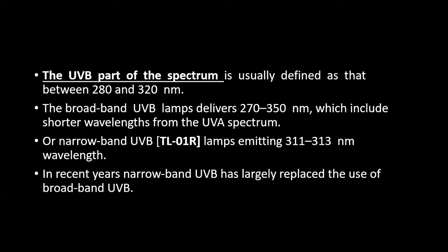Regarding UVB therapy, the wavelength is between 280 to 320 nanometers. There are two kinds of UVB lamps. The first emits a broad band of UVB, with wavelengths between 270 to 350 nanometers, which also includes part of the UVA spectrum. The second, most popular nowadays, is narrow band UVB produced by a special lamp called TL01R, which emits a shorter wavelength between 311 and 313 nanometers.